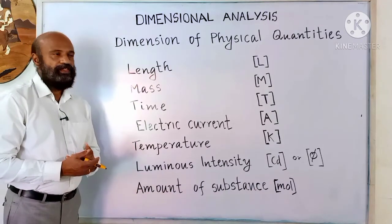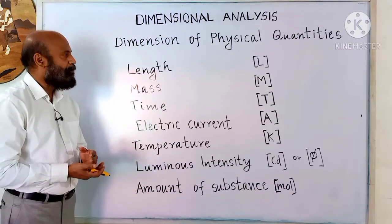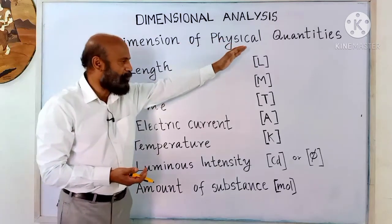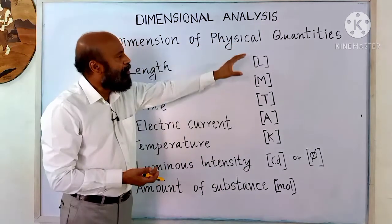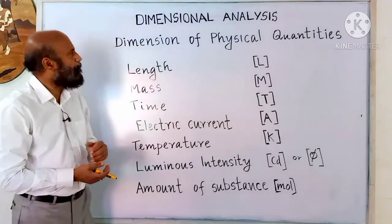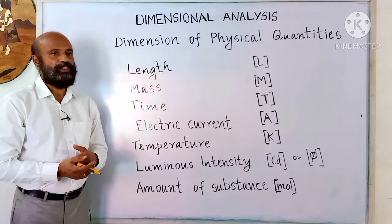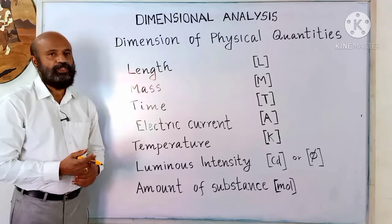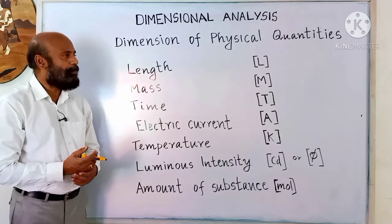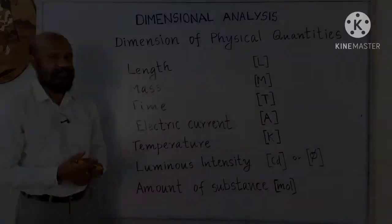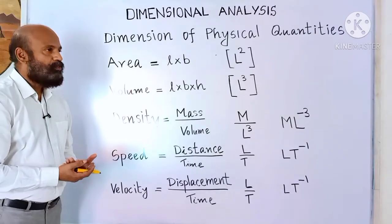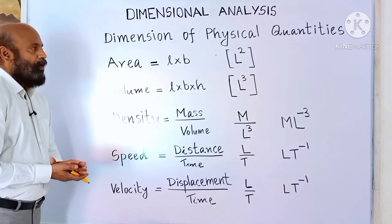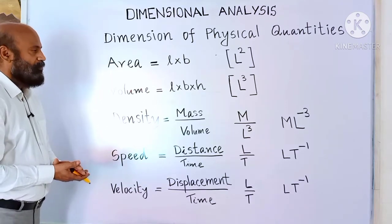Dimensions of derived quantities can be represented in terms of these base quantities. The dimensions of a physical quantity are defined as the powers to which the base quantities are raised. The dimension of a derived quantity can be obtained from the dimensions of a fundamental quantity.